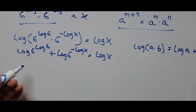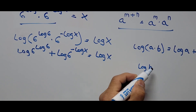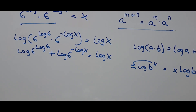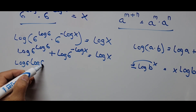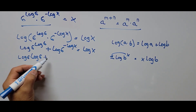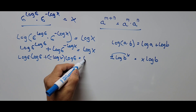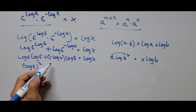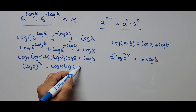Now we employ the power rule: log of b raised to x equals x times log of b, so the exponent becomes the coefficient. This gives us log 6 times log 6, plus bringing down the exponent — negative log of x times log of 6 — equals log of x. Simplifying, this is log 6 squared minus log x times log 6, equals log of x.